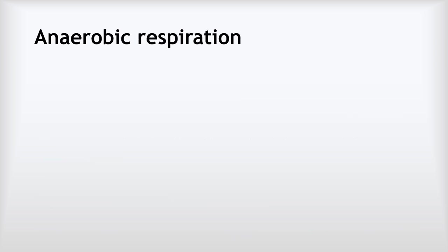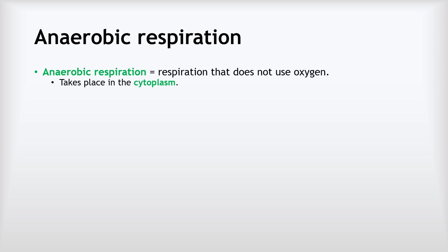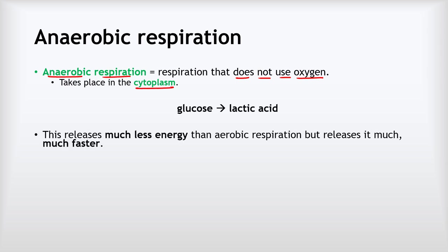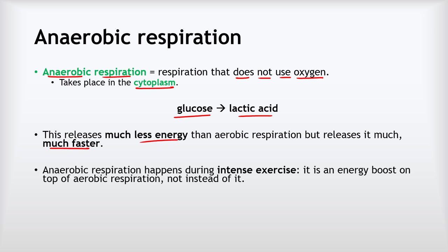The other kind of respiration is anaerobic respiration. Anaerobic respiration does not use oxygen. Rather than taking place in the mitochondria, it takes place in the cytoplasm of all our cells. The equation is even simpler: glucose becomes lactic acid. This releases much less energy than aerobic respiration but it releases it much faster, serving as an energy boost on top of aerobic respiration.